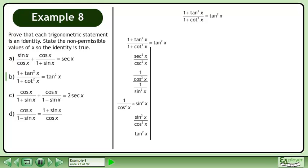Sin²x over cos²x equals tan²x. The left side equals the right side, completing the proof.